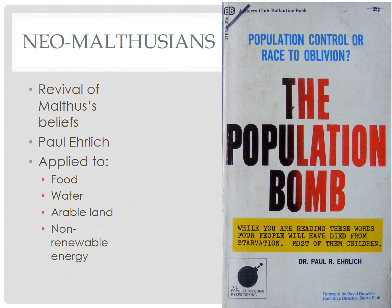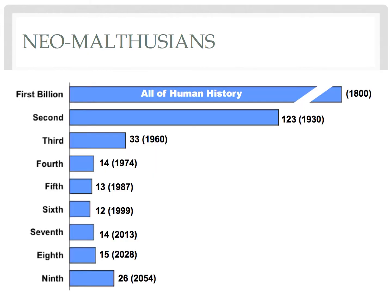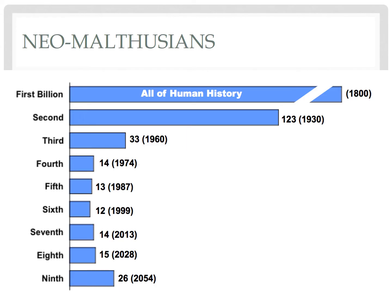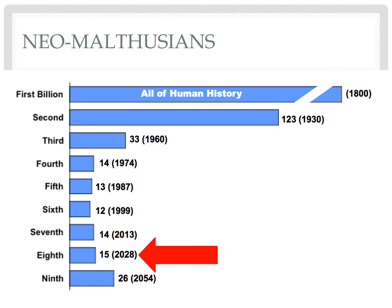A prominent Neo-Malthusian is Paul Ehrlich, who wrote The Population Bomb in 1968. He argued that hundreds of millions of people were going to starve to death. Keep in mind the context of these claims — we had just hit 3 billion people in 1960, and when the book was published in 1968, we were over halfway to our fourth billion person on the planet. This graphic also shows projections; we actually hit 7 billion in 2011, and we will have 8 billion people on the planet in 2022 — so we're growing faster than this graphic predicted.